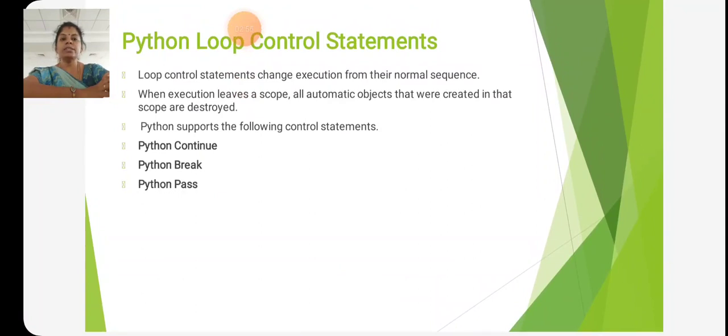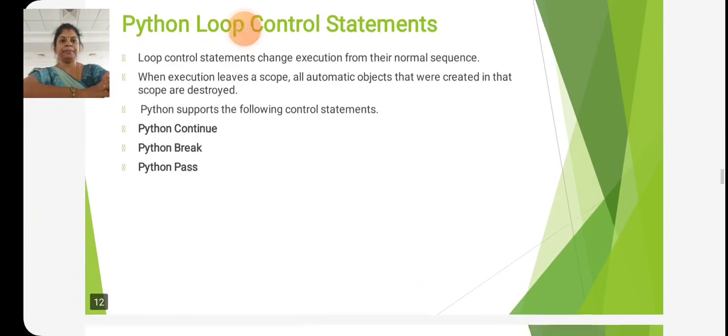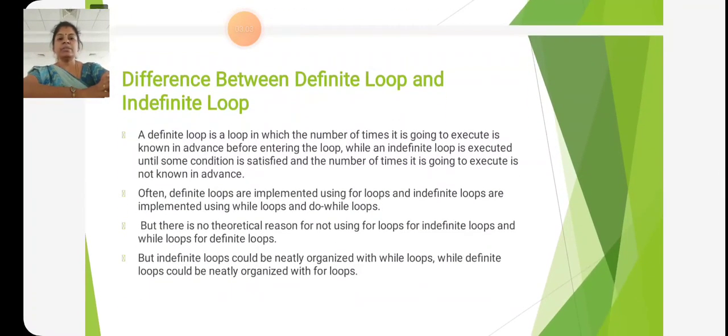Loop control statements include Python continue, Python break, and Python pass. The difference between definite loop and indefinite loop: a definite loop is a loop in which the number of times it is going to execute is known in advance.